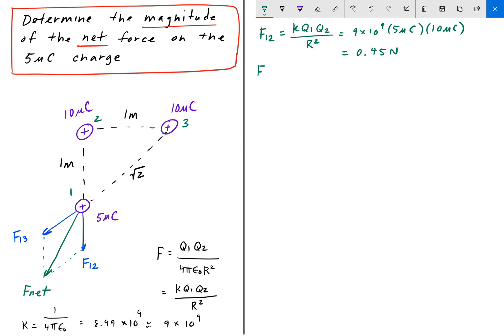Similarly, we do that with F13, which is K Q1 times Q3 this time, divided by R squared, which is 9 times 10 to the 9. So the charge of Q1 is 5 microcoulombs. And the charge of particle 3 is 10 microcoulombs. And that gets divided by the distance between them, which is the square root of 2 squared. So solving for this, we get F13 is 0.225 newtons.